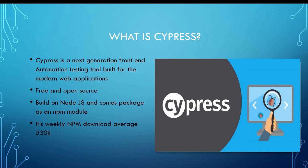Cypress is built on Node.js and comes packaged as an NPM module. Since it is built on Node.js, it uses JavaScript for writing tests, but about 90% of coding can be done using Cypress built-in commands, which are easy to understand. Cypress also comes as a bundle with jQuery and inherits many of jQuery's functions. It has its own commands too, which we'll see in later videos. It's growing very fast — weekly NPM download average is 530K plus — so Cypress is getting popular and increasing dramatically.